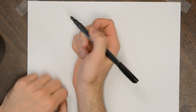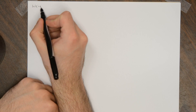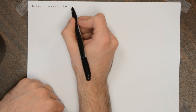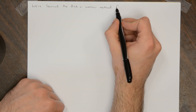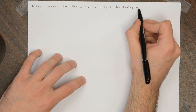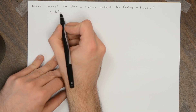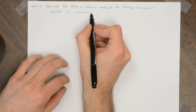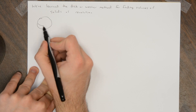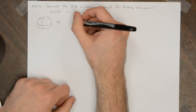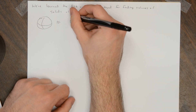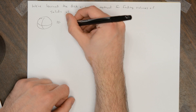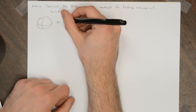Alright, we've learned the disk or the washer method for finding volumes of solids of revolution. The idea was you took your solid of revolution that you wanted to approximate, and you estimated it with a stack of washers, or disks, or cylinders. You can think of it as being sort of like a wedding cake or a layer cake, approximated by one of these.